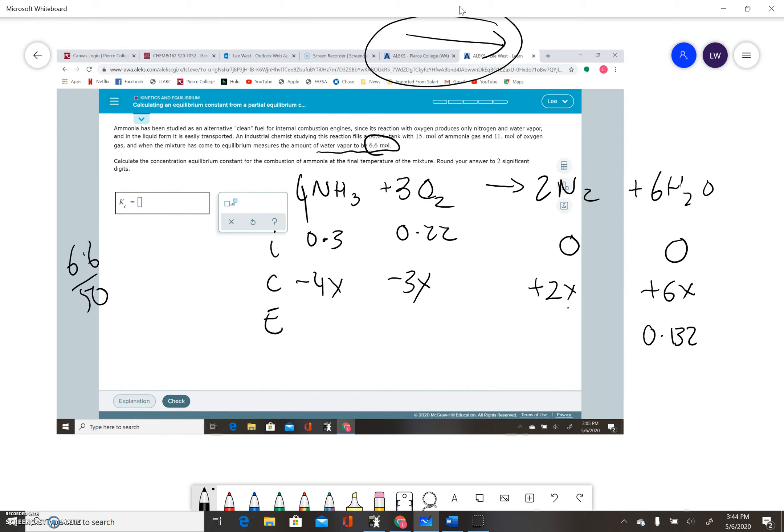We know that 0.132 is equal to 6x. So x is 0.132 on 6, and we get our value for x, which is 0.022.